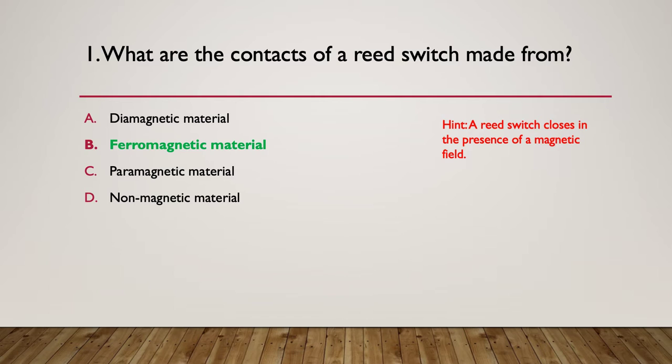Here's your answer. It has to be a ferromagnetic material. Non-magnetic material obviously wouldn't work. Diamagnetic material only becomes magnetized when magnetic fields are around. And a paramagnetic material only stays partially magnetized after you've introduced a magnetic field. The answer was B. The contacts for a reed switch are made from a ferromagnetic material.